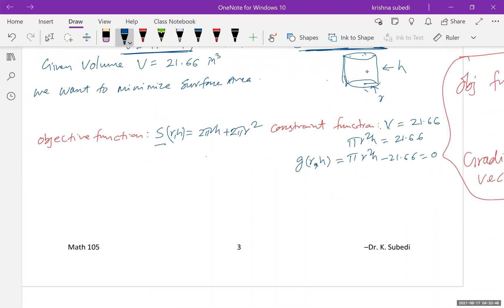Now, first, what we do is step one, we will create the Lagrangian function. So we create Lagrangian function, which is given by capital F of r, h, and lambda. We introduce another variable, lambda.